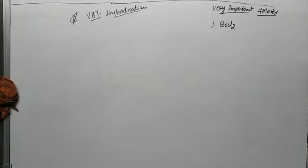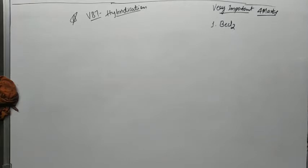Today's topic is VBT hybridization, which is very important for exams. We have four example molecules: BeCl2, ammonia, BF3, and water. These four structures are very important and we will definitely get exam questions from this chapter.